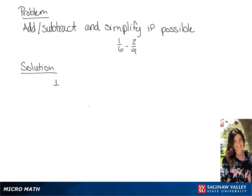We have 1 over 6 minus 2 over 9. We need a common denominator, which we will find to be 18. So we're going to multiply the first fraction by 3 over 3 and the second fraction by 2 over 2, giving us 3 over 18 minus 4 over 18. Our final answer will be negative 1 over 18.